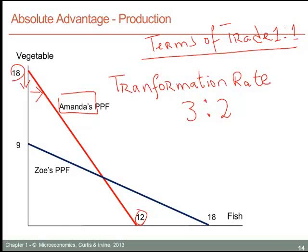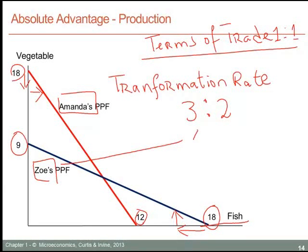What about Zoe? If Zoe specializes in fish and decides to use some of her hours for the production of vegetables instead, she reduces her production of fish and takes the time saved to allocate to vegetables — she will be able to produce one unit of vegetable for every two units of fish she gives up. So Zoe's transformation rate is one to two. They can each transform vegetables into fish at a different rate, which is just another way of saying that they have different specialization efficiencies.